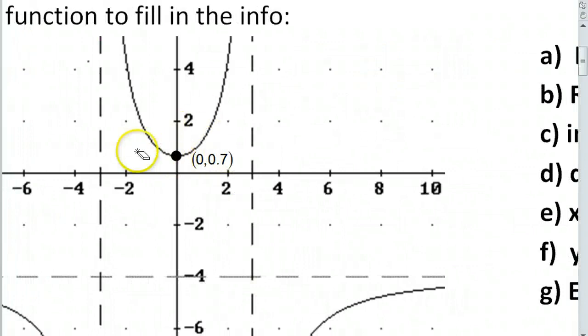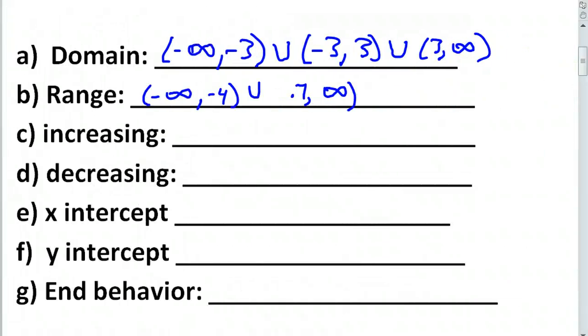Yeah, Bryce is pointing out to me that I made a mistake by putting a parenthesis on the 0.7. That should be a bracket. It's touching the 0.7. It's not an asymptote or anything. So, yeah. Bracket on the 0.7. All right. Any other questions?